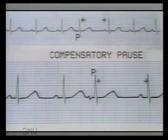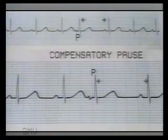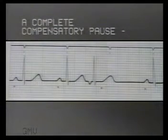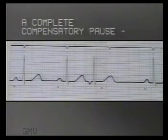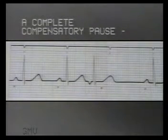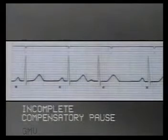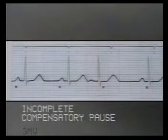If it compensates exactly for the missed beat and the third sinus beat occurs exactly where it would otherwise have occurred, then it is termed as a complete compensatory pause. Observe this strip carefully. The red spots mark the expected occurrence of P waves and the black line at the top marks the expected occurrence of the R waves, that is if the sinus rhythm was undisturbed. You will note that the beat after the premature beat has occurred exactly where it should have occurred, so this is a complete compensatory pause. In contrast, in this tracing, the beat after the premature beat has occurred before the next expected beat, so this is an incomplete compensatory pause.